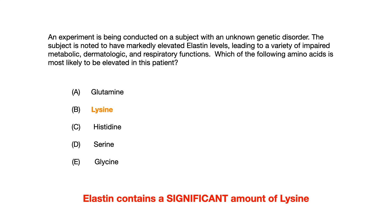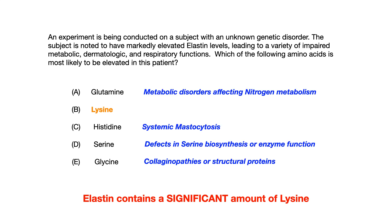Let's look at the other possible answer choices and ask ourselves what the vignette might have included if they wanted us to pick a different amino acid. Choice A, glutamine — if you're going to have changes in glutamine, you're probably going to see that in metabolic disorders affecting nitrogen metabolism. Choice C, histidine — you could see changes in histidine associated with systemic mastocytosis. Choice D, serine — defects in serine biosynthesis, and more specifically, serine is very intimately associated with enzyme function, so anything having to do with enzymes or serine biosynthesis would change levels of serine.